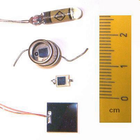Photodiodes are often used for accurate measurement of light intensity in science and industry, and generally have a more linear response than photoconductors. They are also widely used in medical applications, such as detectors for computed tomography coupled with scintillators, instruments to analyze samples, immunoassay, and pulse oximeters. Pin diodes are much faster and more sensitive than PN junction diodes, and hence are often used for optical communications and lighting regulation. For extremely low light intensities, avalanche photodiodes, intensified charge-coupled devices, or photomultiplier tubes are used for applications such as astronomy, spectroscopy, night vision equipment, and laser rangefinding.